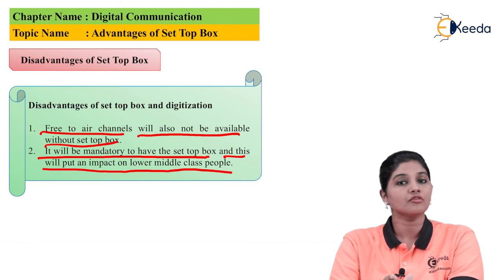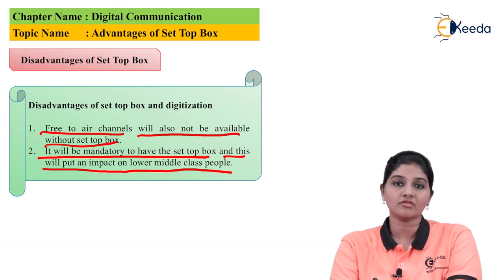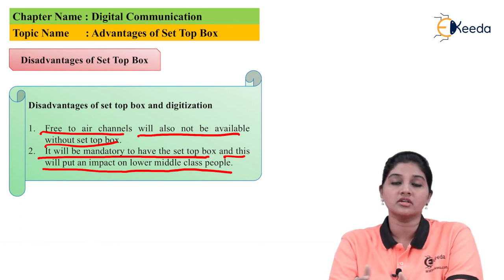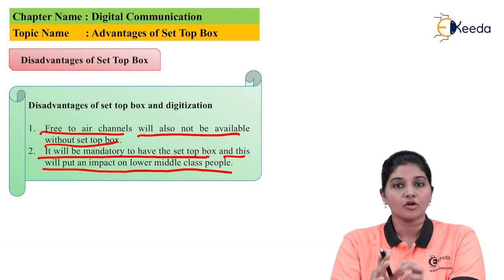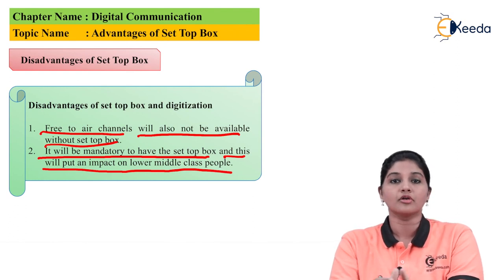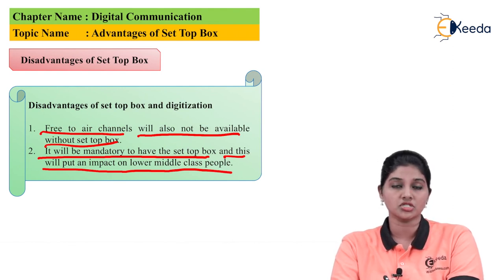So this is what about the various advantages and disadvantages of the set-top box. Apart from the disadvantages, people prefer to have a set-top box as the number of channels gets increased, picture quality gets better, and users can select any package or channel depending on their requirement. Because of this, the set-top box has become more popular compared to other systems. I hope you understand the topic of advantages and disadvantages of the set-top box. Thank you very much for watching this video.